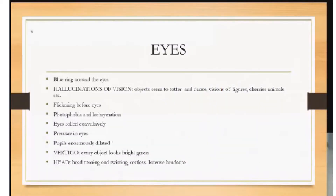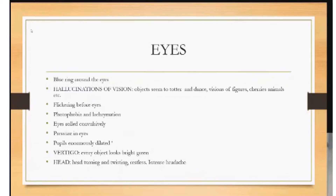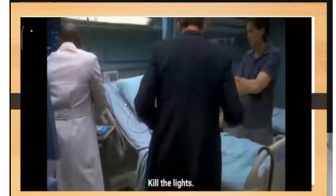The vision through the child's eye was different from the audience's perspective, indicating a defect in the eye. The first observation was that there were blue rings around the eyes. There is hallucination of vision seen in the remedy — objects seem to totter and dance, with visions of figures, cherries, animals, etc. There is flickering before the eyes, photophobia, lacrimation, eyes rolled convulsively, pressure in eyes, and pupils enormously dilated. The remedy also has vertigo where every object looks bright green, with head turning, twisting, restlessness, and intense headache. The eye symptoms of the drug are the most important symptoms.